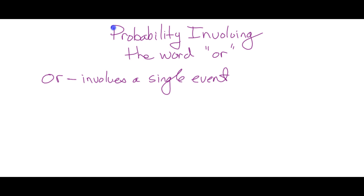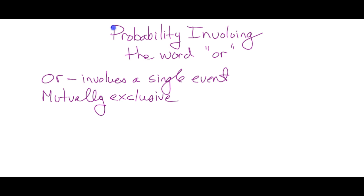Also involved with the word OR: when you see the word OR, you must decide whether this single event is mutually exclusive. Mutually exclusive is another key word. So they could ask you — is it mutually exclusive? And if they give you four scenarios, one of which is correct, just remember you should be seeing the word OR, not the word AND. If they're asking which of these is mutually exclusive and you see the word AND, just cross it off. Mutually exclusive involves the word OR and deals with the outcome of a single event.